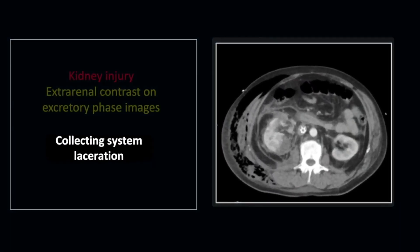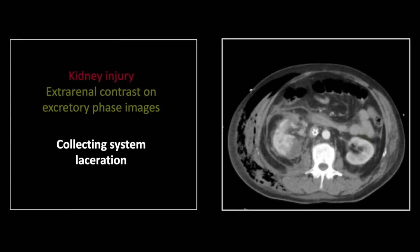Our next case is a classic collecting system laceration. Of course, you have to wait for the delayed and excretory phase images to exclude this particular injury. So on the initial corticomedullary phase, there is a devascularized, hypodense, non-enhancing segment in the medial posterior right kidney.